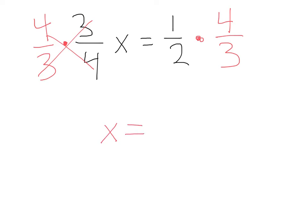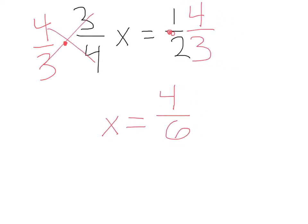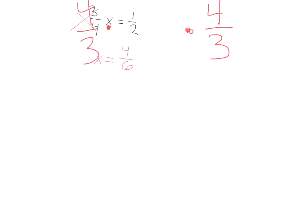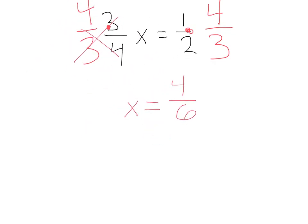We're going to be left with our variable by itself on this side. Here we have 1 half times 4 thirds. I multiply the 1 times the 4 to get 4. 2 times the 3 on the bottom to give me 6. We do have our variable by ourselves. But always remember, we do want to simplify our answer. This 4, 6, I have a 2 that can go into the 4 and a 2 can go into the 6. That's going to give me 2 thirds as our answer.